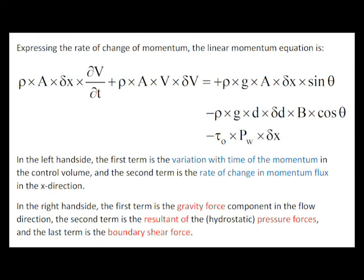The second term is the rate of change of momentum flux in the x direction. In the right hand side, the first term is the gravity force component in the flow direction. The second term is the resultant of the pressure forces, assuming hydrostatic pressure distribution. And the last term is the boundary shear force.